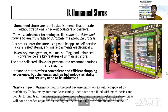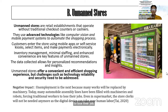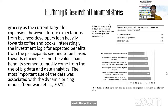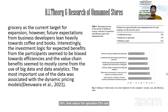Today, many automobile assembly lines have been filled with machinery and robots, forcing traditional workers to lose their jobs. Even in supermarkets, store staff will not be needed anymore as digital devices take over human labor. Research shows additional revenue increases of 14 percent, reduction in operational rejection of 15 percent, and efficiency gains of 21 percent.